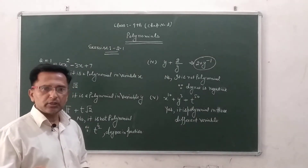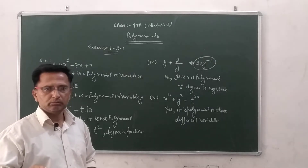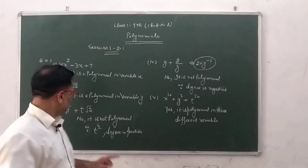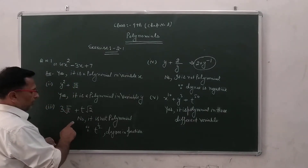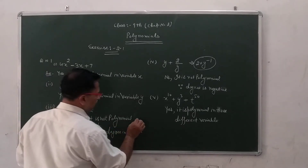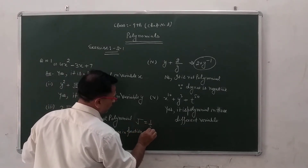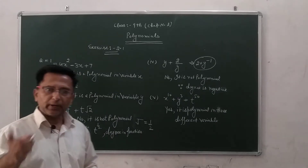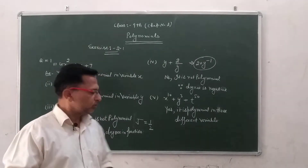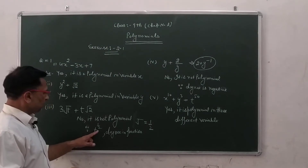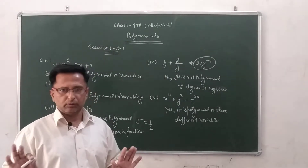Because here the variable has a root — root p appears over p, and the value of root is 1 by 2. Since the exponent comes as a fraction, and whenever any variable has a fractional exponent, it is not a polynomial.